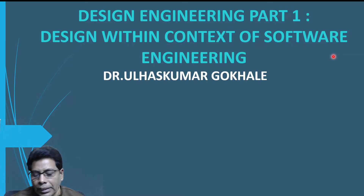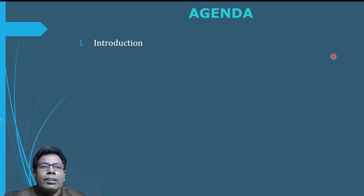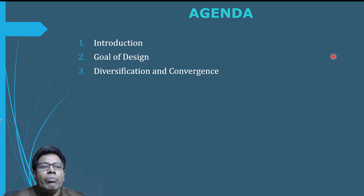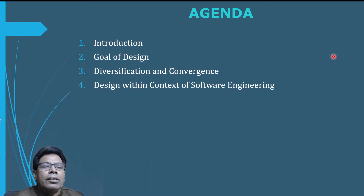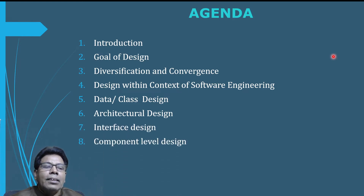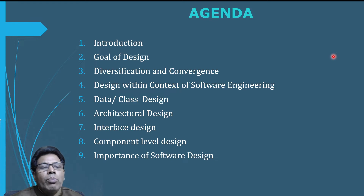Let us start with the agenda. First we will give an introduction about design, then we will study the goal of design, then we will study two terms: diversification and convergence, because these two terms are very important for the design. Then we will study the main topic: design within context of software engineering. Then we will study data or class design, architectural design, interface design, component level design, and finally the importance of software design.